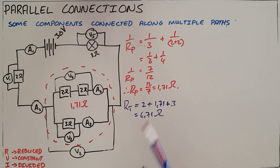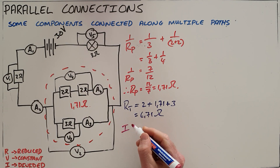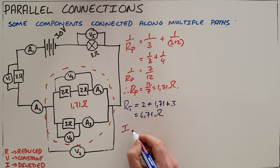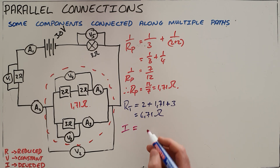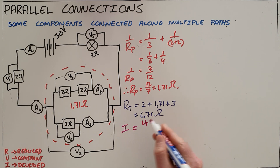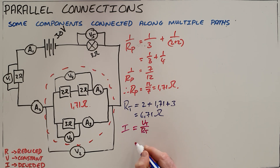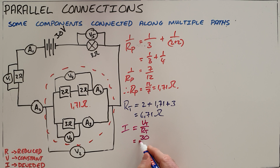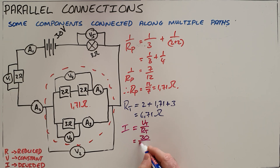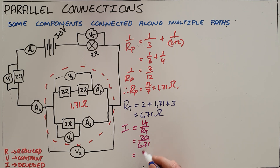Once we have the total resistance, we know the battery is providing a total voltage of 30 volts. We can use Ohm's law to say that the total current in the circuit equals the total voltage divided by the total resistance — 30 volts divided by 6.71 Ohms.